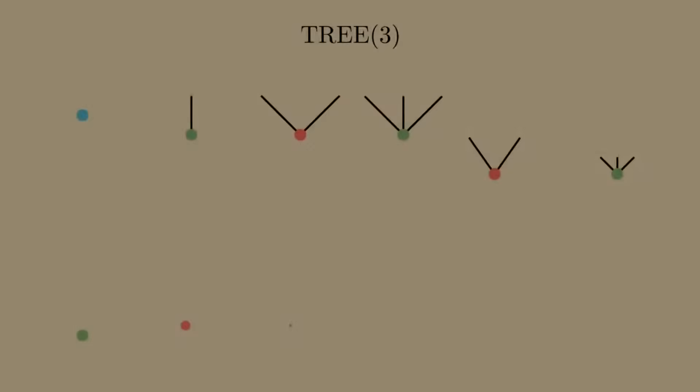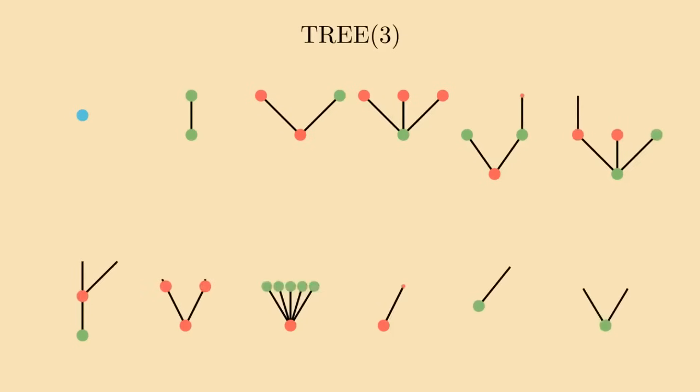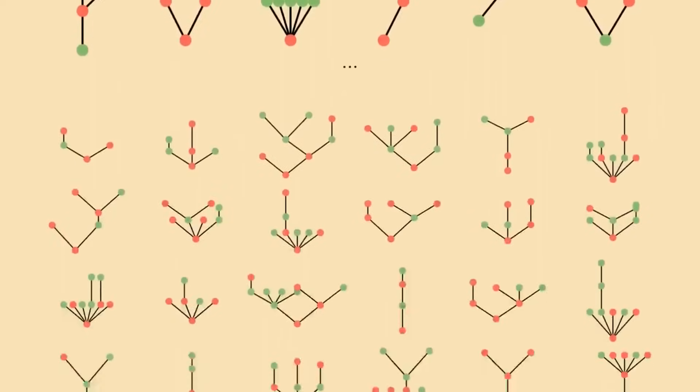And so, the solution to Tree 3 is, without a doubt, a mind-bendingly enormous number. But it is still a finite number.